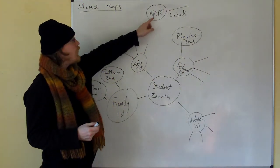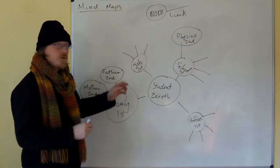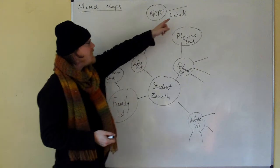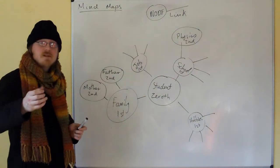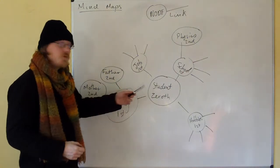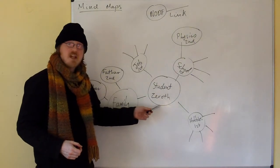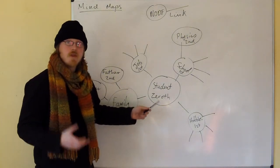Mind maps are made of nodes, which are ideas which you put a circle around, and the links between those ideas. Now, what I'd like you to do is make a mind map of yourself. You start with your name in the zeroth order node.